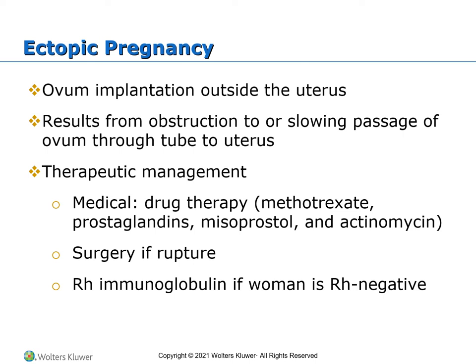An ectopic pregnancy is any pregnancy in which the fertilized ovum implants outside of the uterus. This could happen in the fallopian tubes, the cervix, the ovaries, the intestines, or the abdominal cavity. It draws the blood supply from the site of the abnormal implantation and can rupture organs due to size. It can lead to massive hemorrhage, infertility, or death. It occurs in one in every 50 pregnancies — roughly 2% — and the incidence has increased fourfold in the last 30 years, accounting for 10% of maternal mortality in the U.S. A ruptured ectopic pregnancy is a medical emergency.